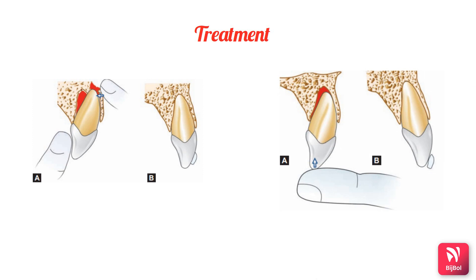For the extruded tooth, slow and steady pressure is applied to displace the coagulum formed between the root apex and the floor of the socket. After this, the tooth is immobilized, stabilized, and splinted for approximately two weeks.